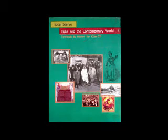The Reign of Terror: the period from 1793 to 1794 is referred to as the Reign of Terror. Robespierre followed a policy of severe control and punishment. All those he saw as enemies of the Republic — ex-nobles and clergy, members of other political parties, even members of his own party who did not agree with his methods — were arrested, imprisoned and tried by a revolutionary tribunal. If the court found them guilty, they were guillotined. The guillotine — a device consisting of two poles and a blade with which a person is beheaded — was named after Dr. Guillotin who invented it.